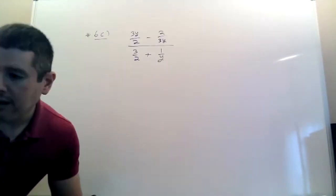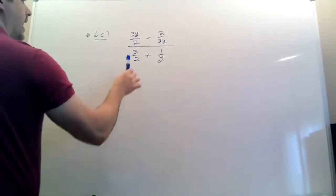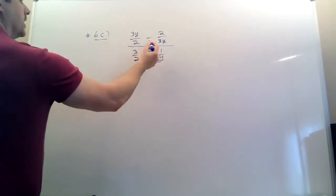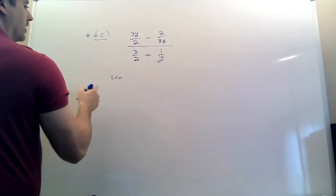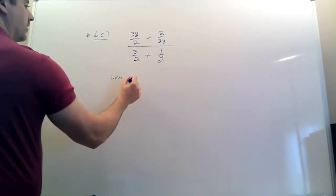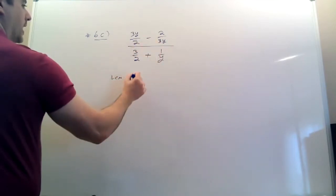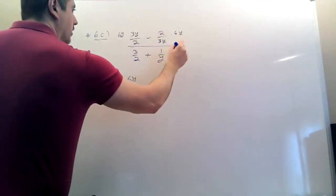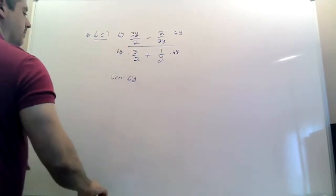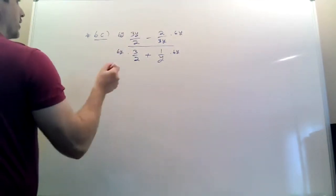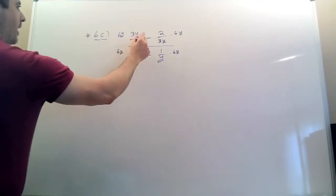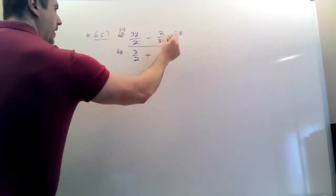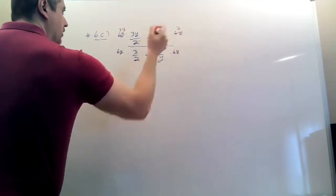This is 6c off of the practice test. You have a 2, a 3y, a 2, and a y. The least common multiple of 2 and 3 is 6, and as long as one of those fractions has a y in it, you need to multiply them all by 6y. So put 6y on all the tops, then divide all the bottoms away. 6y cut in half leaves you with 3y here.